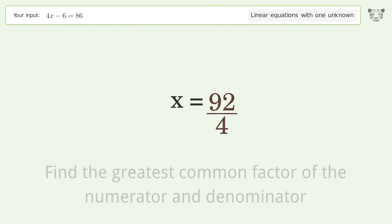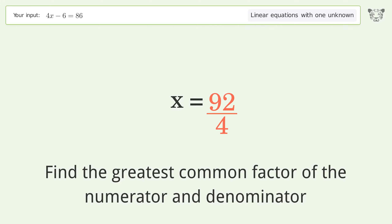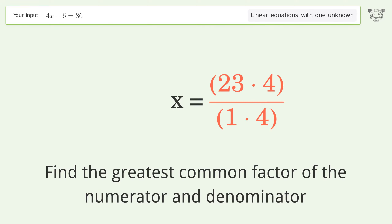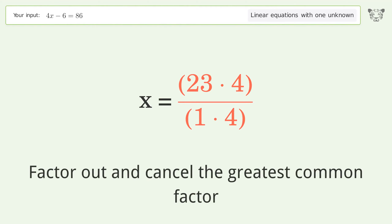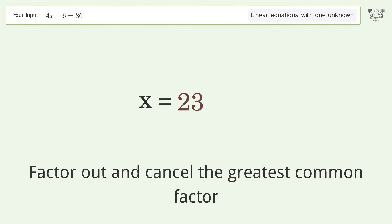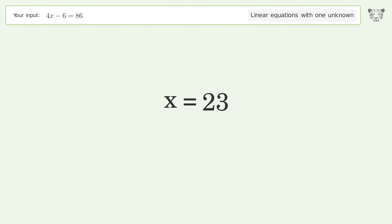Find the greatest common factor of the numerator and denominator. Factor out and cancel the greatest common factor. And so the final result is x equals 23.